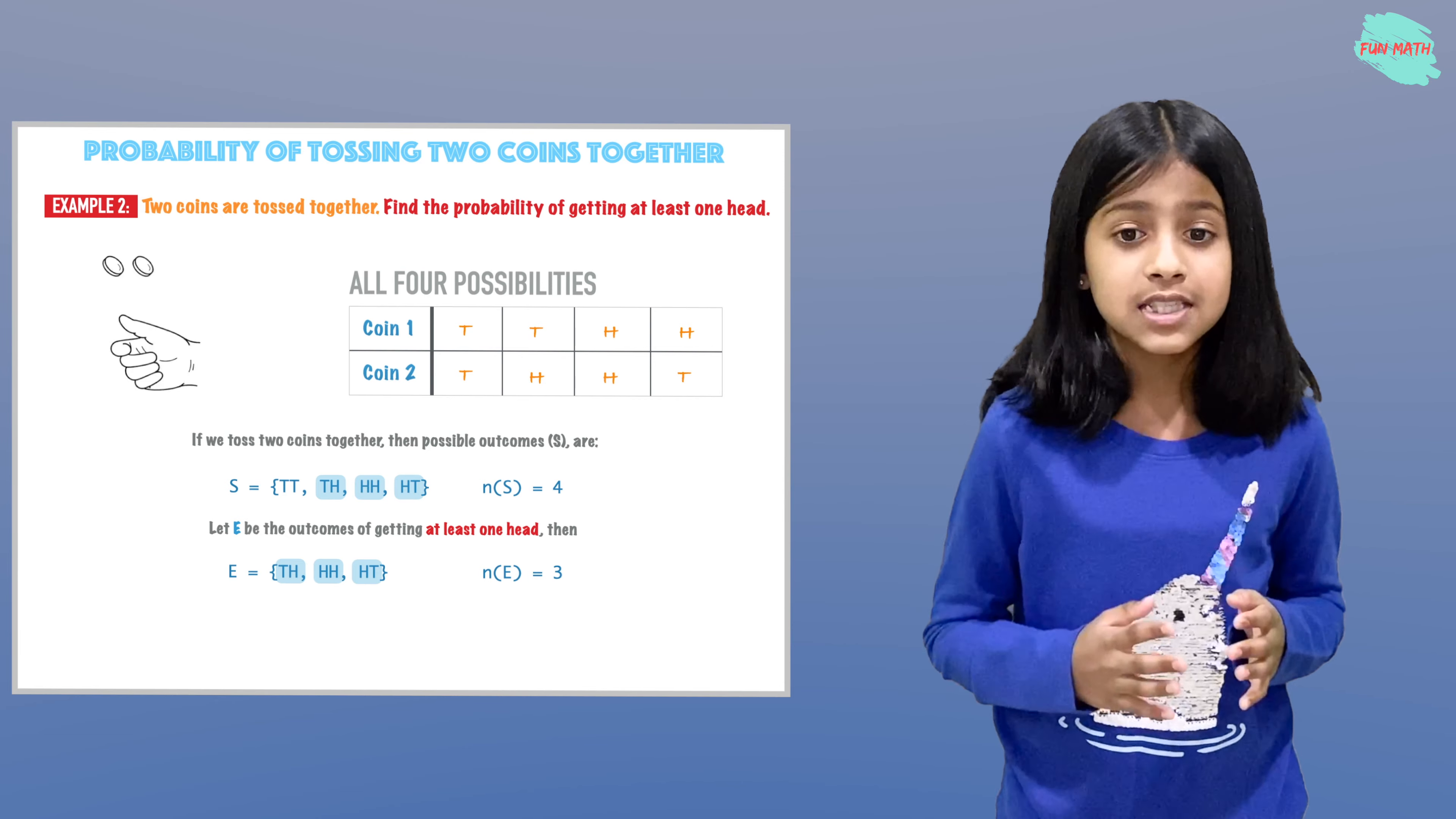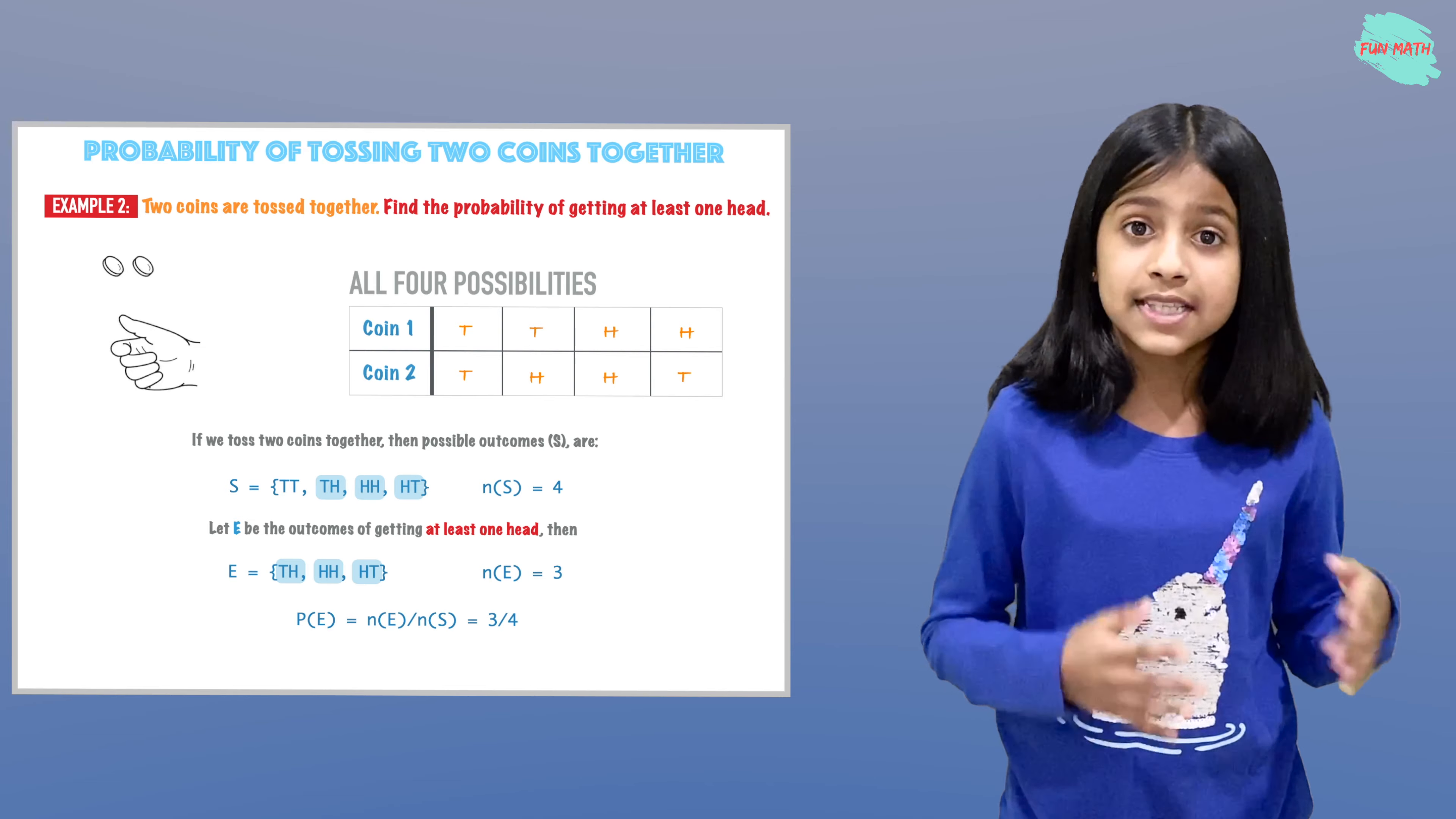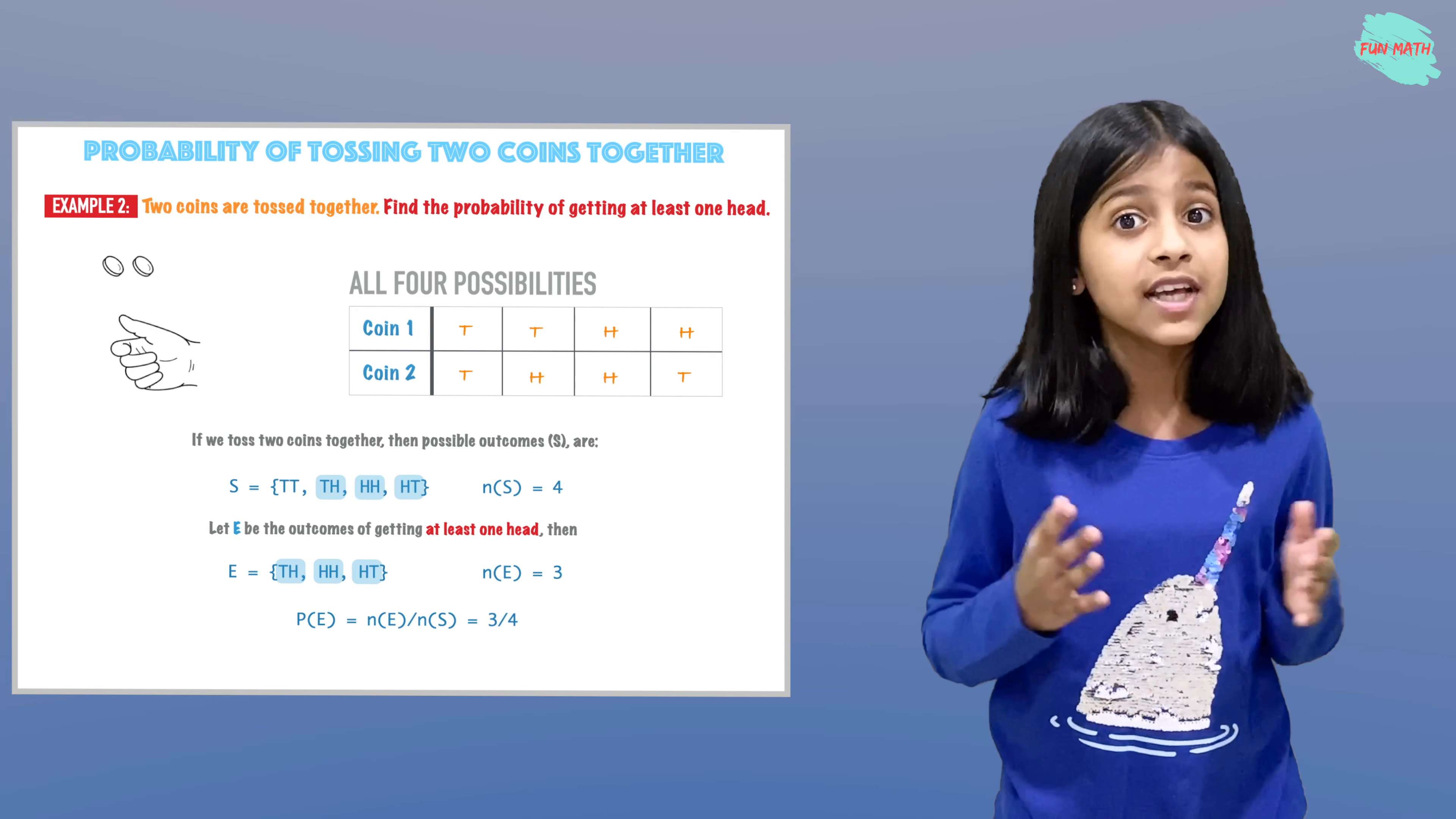There are three possibilities for E. This is our formula: the probability of E is the number of elements in E over the number of elements in our sample space.